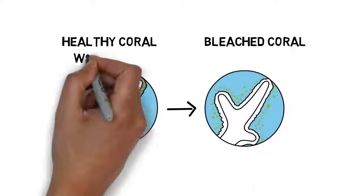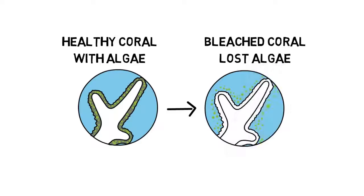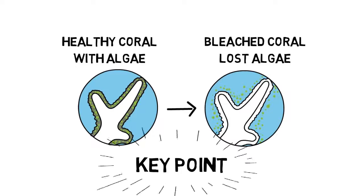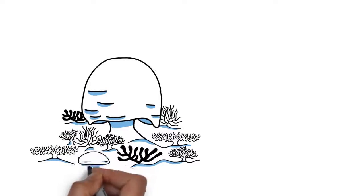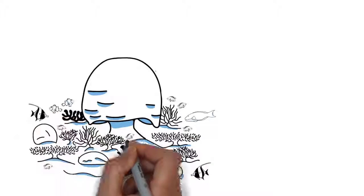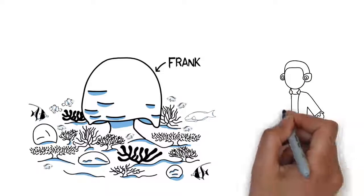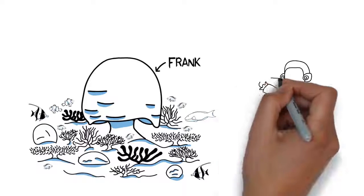The relationship between a coral and its algae is so important that without it coral reefs would simply not exist. Going back to Frank, that guy has seen things. He was already a big coral when Captain James Cook passed by his reef in the year 1770.